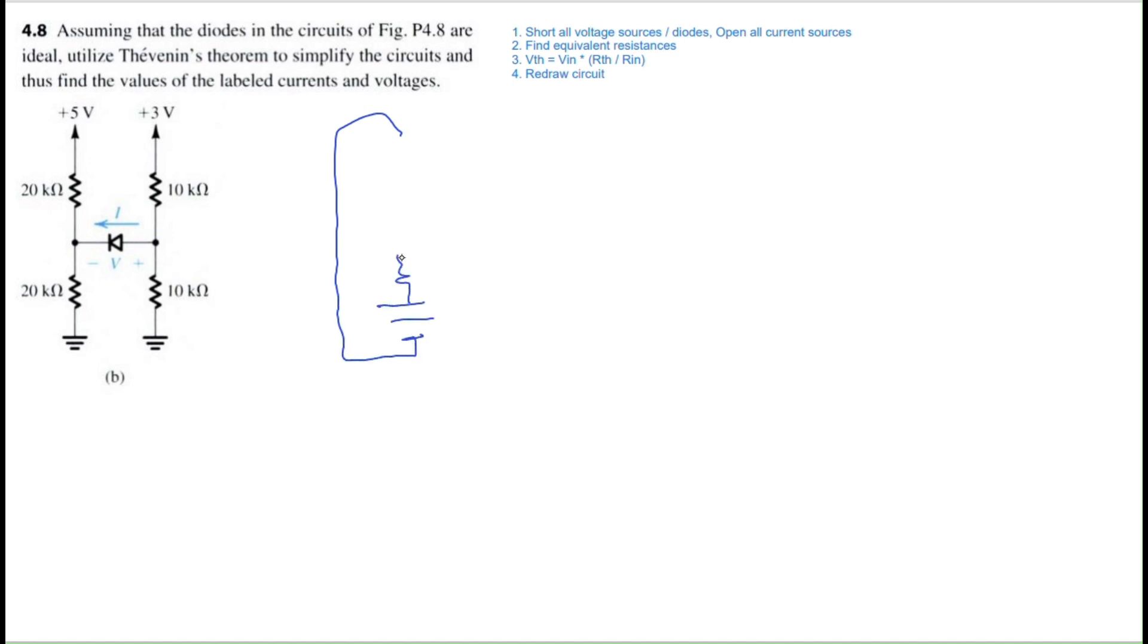On the left side, we have this ground with the 20 kilo ohm and another 20 kilo ohm. We have a diode here, but we're going to short it for now. We have another 10 kilo ohm here. Now we'll find all equivalent resistances. We can see this is kind of parallel with each other. This should be a ground source too. So I'm going to call this R1 and this is going to be R2.